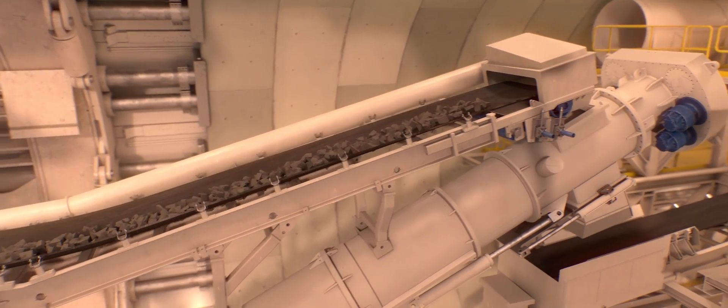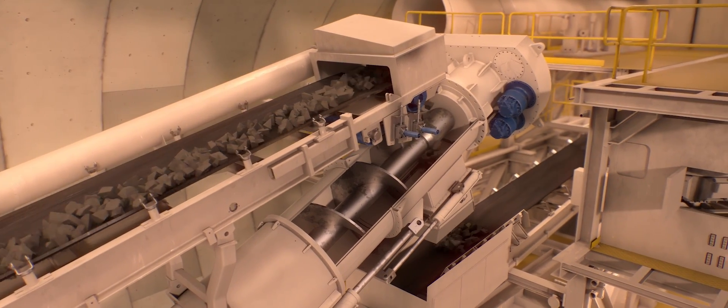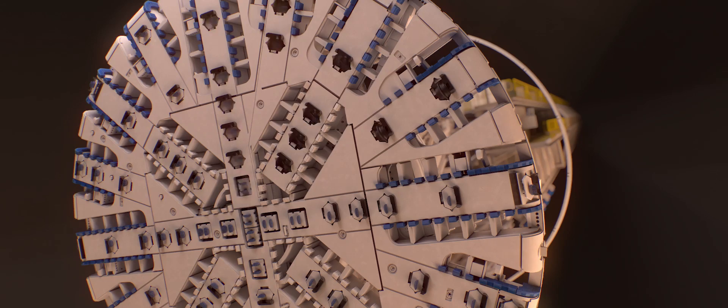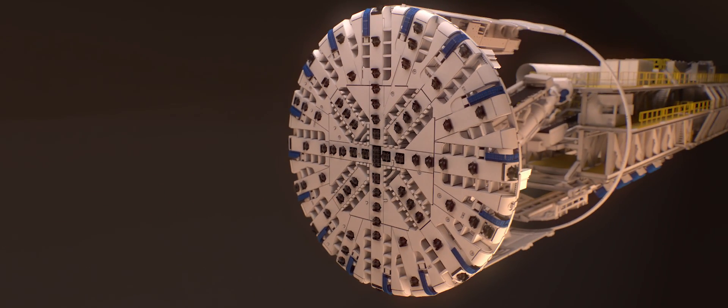The muck passes through the screw conveyor onto the TBM belt conveyor. Replaceable EPB knife bits can be replaced with disc cutters on the cutter head and other hard rock tooling. Robbins crossover XRE TBMs combine the most powerful features from our time-tested machines.